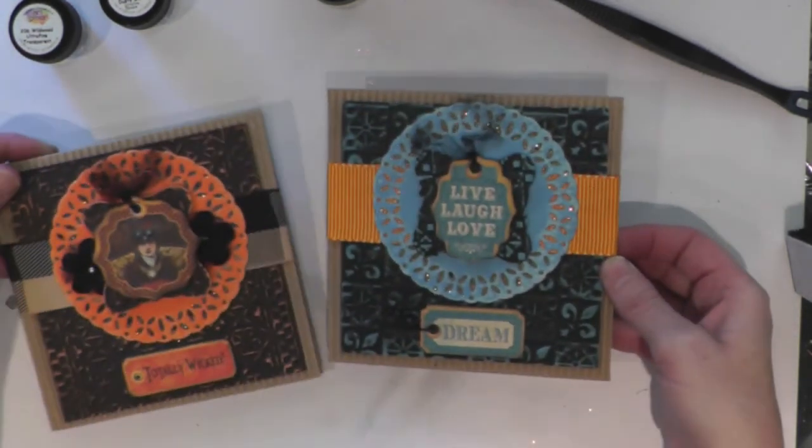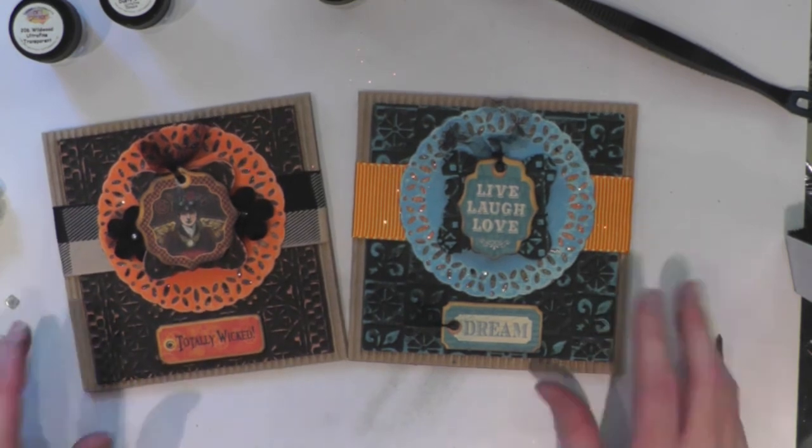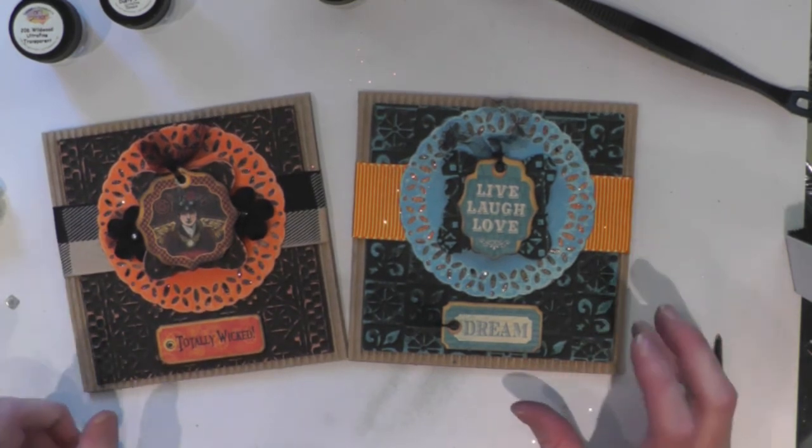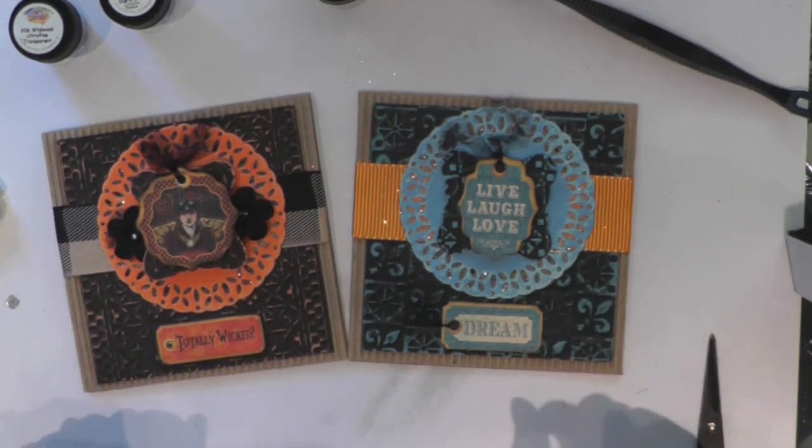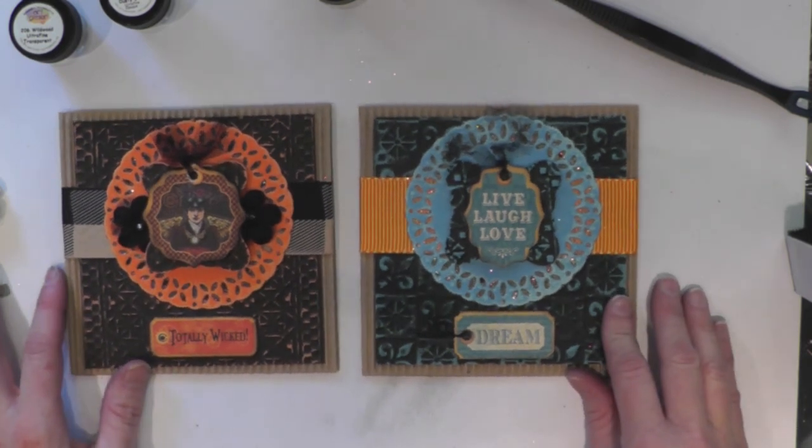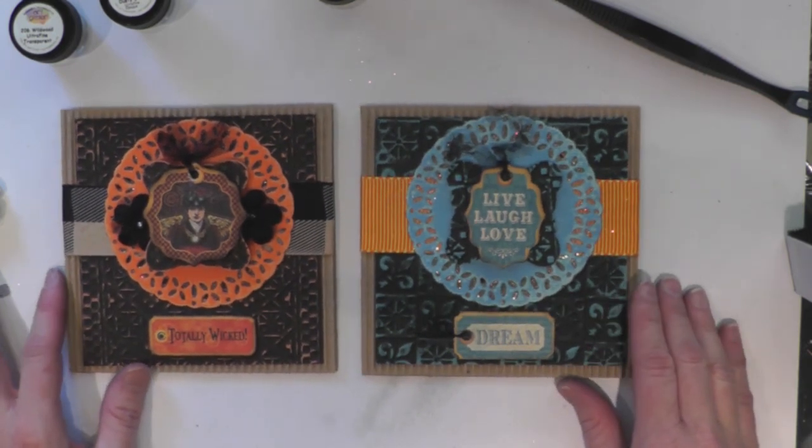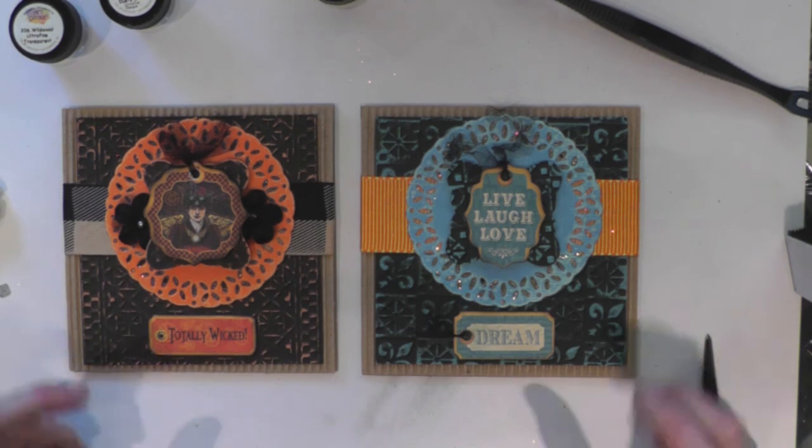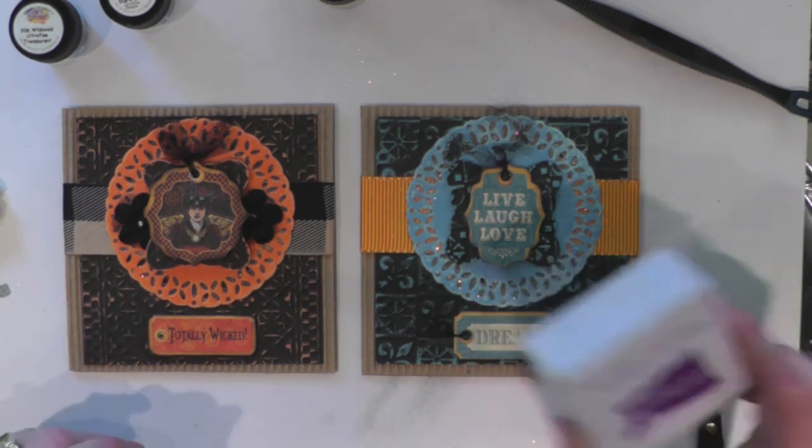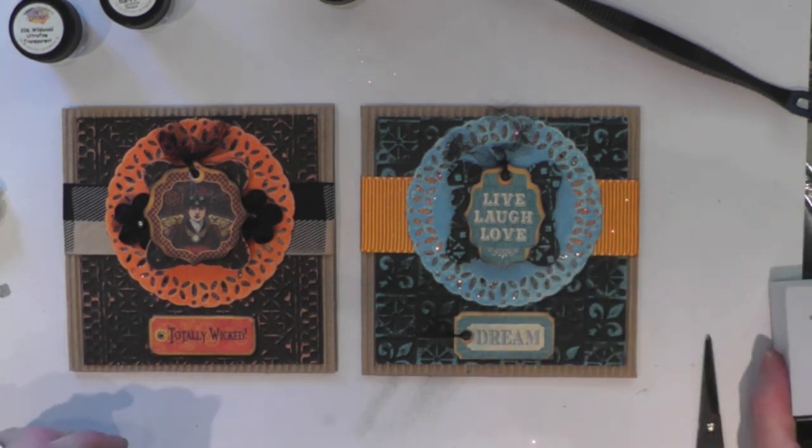And there you go. Exact same sketch. Two drastically different cards using Coordinations, Xyron, and a little bit of Graphic 45. So I hope you'll take a shot at making your project like this and getting out your die cuts and your Coordinations and having fun with your sanding block. Thanks for joining me today. Bye.